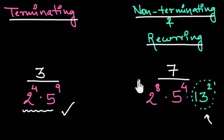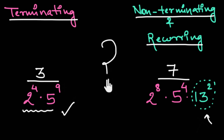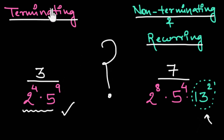In this video, let's actually see why we need only twos and fives and nothing else in order to make the decimal form terminating.